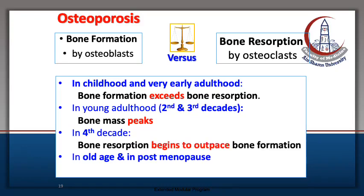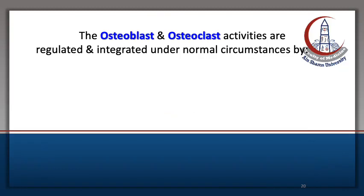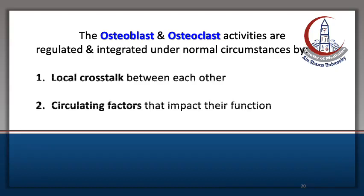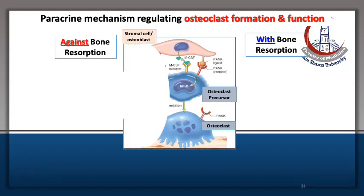In the fourth decade, bone mass begins to decrease, and in old age, acceleration of bone resorption occurs. This balance between both cells is maintained either by local cross-talk or by circulating factors that impact their function.